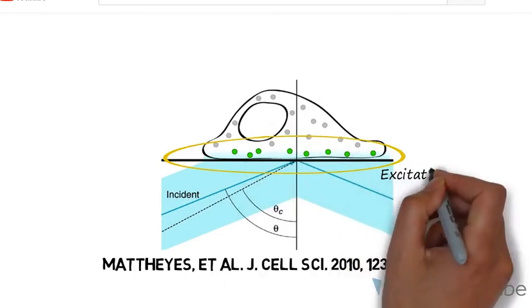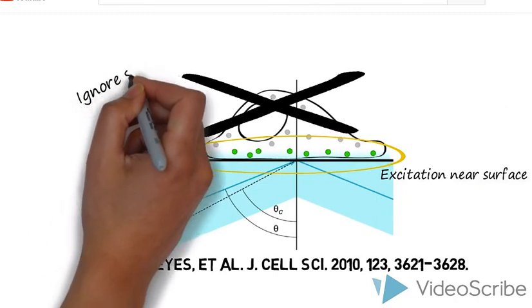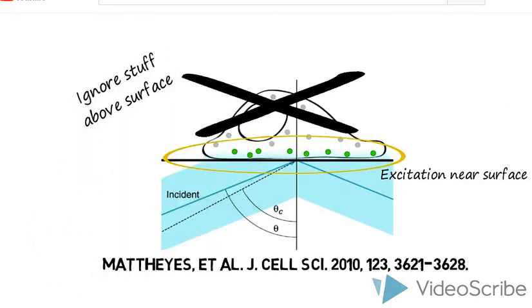The evanescent wave excites fluorophores near the interface and ignores anything else, whether it be fluorophores in the cell or fluorophores freely diffusing in the solution above.